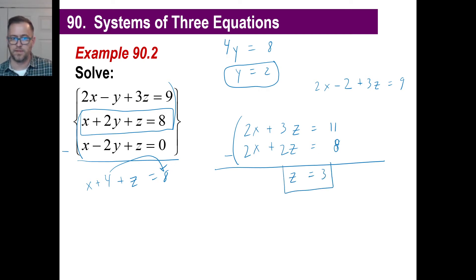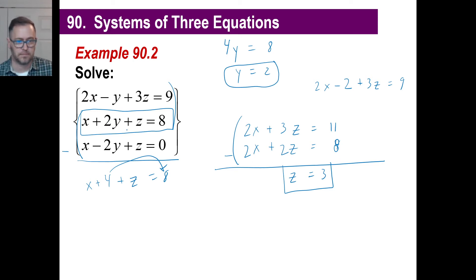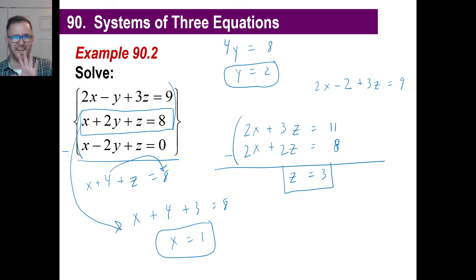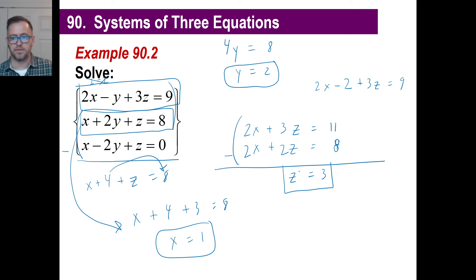Now we've got y and z, so we can go into any of the original equations and solve for x. Let's use equation 2: x plus 2y — 2 times 2 is 4 — plus z equals 8. So x equals 8 minus 7, which is 1. Let's verify using the top equation: 2 times x is 2, minus y is 2, so that's 0, plus 3 times z — z is 3, so 3 times 3 is 9. That equals 9. It works!